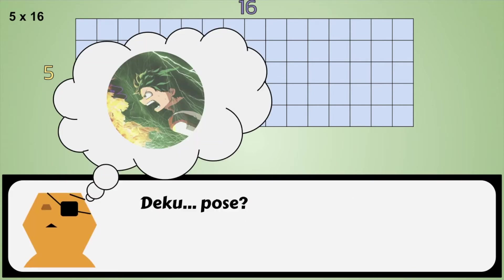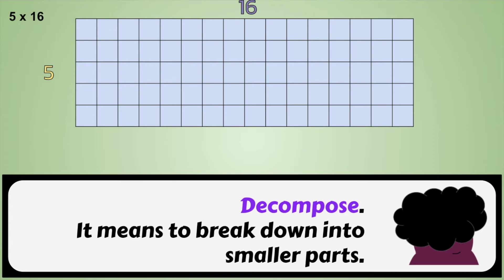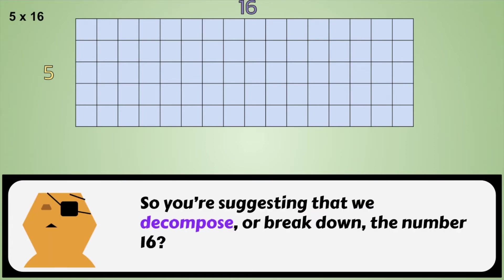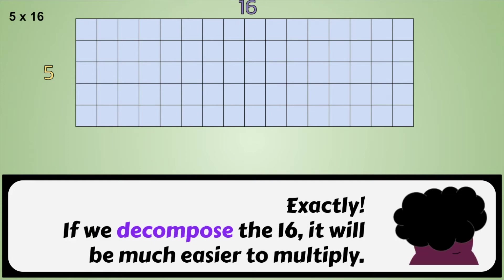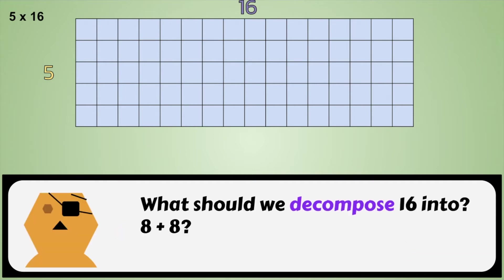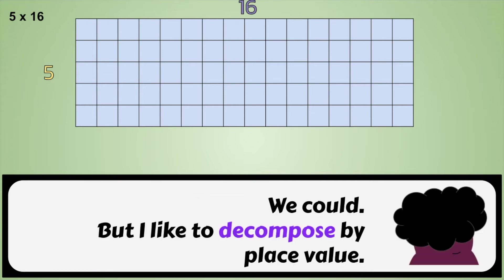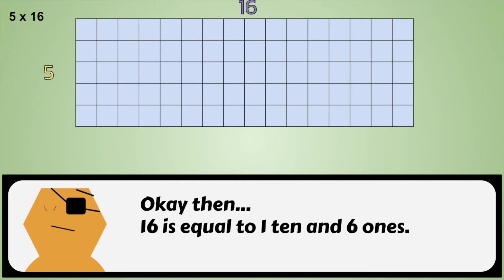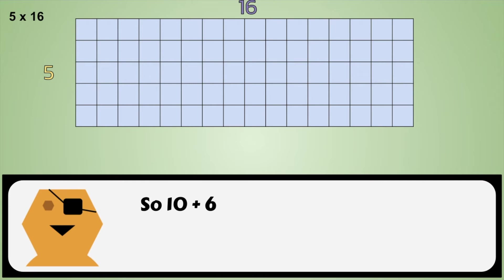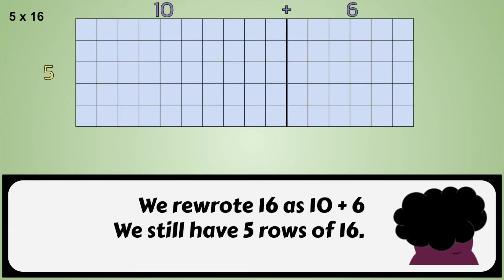Decompose? Decompose means to break down into smaller parts. So you're suggesting that we decompose or break down the number sixteen? Exactly. If we decompose the sixteen, it will be much easier to multiply. What should we decompose sixteen into? Eight plus eight? We could, but I like to decompose by place values. Sixteen is equal to one ten and six ones. So ten plus six? Bingo! We rewrote sixteen as ten plus six.